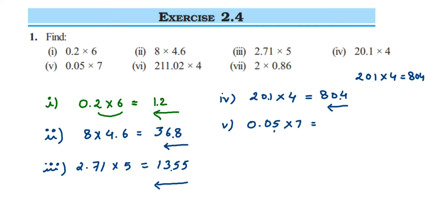The fifth question is 0.05 multiplied by 7. Multiply 5 × 7 = 35. After the decimal point we have two digits, so from the right side after two digits we place the decimal — but there's no number after that, so we put a zero: 0.35. Remember, after the decimal you pronounce each digit separately — it is 'zero point three five', not 'zero point thirty-five'.